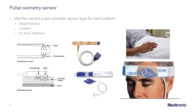It's important that the correct pulse oximeter sensor be used for each type of patient, meaning adult patients should have adult sensors, pediatric patients have pediatric sensors, that the location of the sensor be appropriate for the type of probe used, and that the probe properly fit, have good form, and be at the proper tightness in order to function properly.